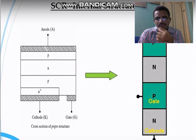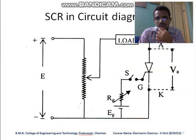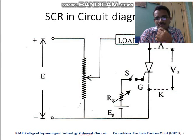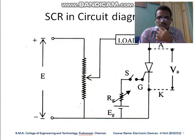Now, coming to how to connect a Silicon Control Rectifier in a circuit: the P-type material is connected to the anode of the battery and the N-type material to the cathode. In the SCR circuit diagram, the anode is connected via a rheostat to the positive terminal of the battery, the cathode is connected to the negative terminal, and the gate is connected by a switch to a small gate voltage.